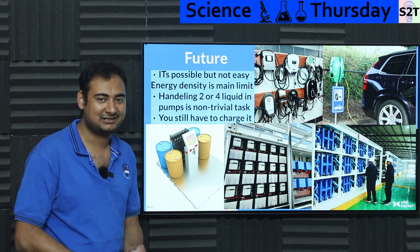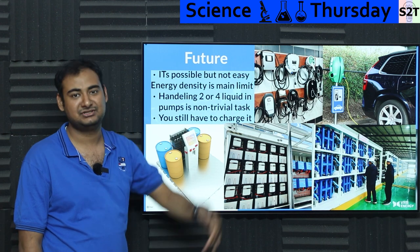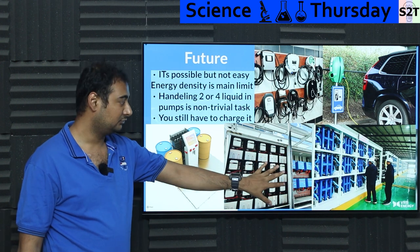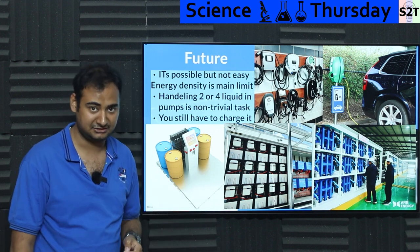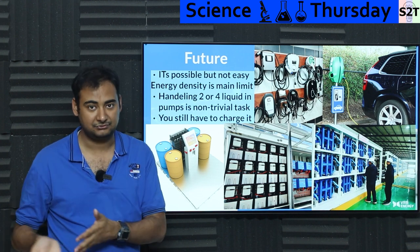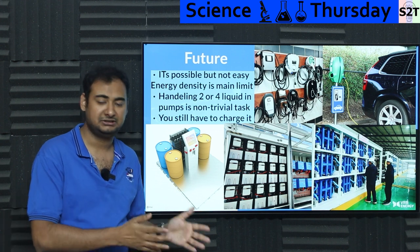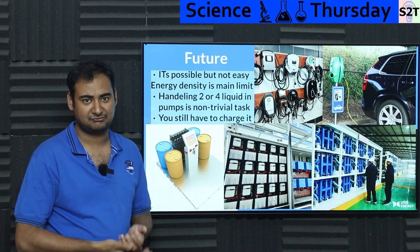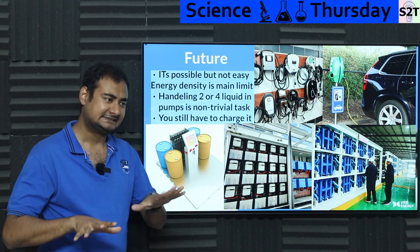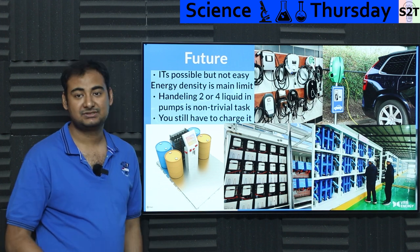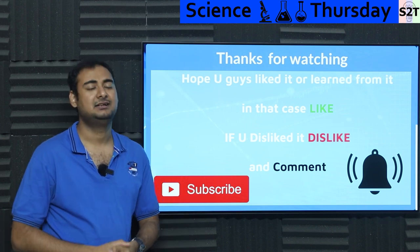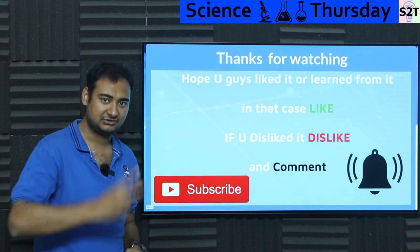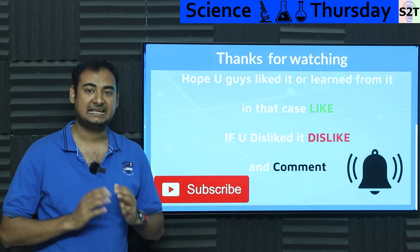Fluid batteries are here and they're awesome for grid-scale and industrial-scale energy storage. In the future they could be great for household storage — something the size of a refrigerator that works for years with periodic motor and membrane maintenance. But for cars, I'm a bit shaky on it. So that was my presentation on nano flow cell batteries — hopefully you liked it and learned from it. Please like, share, comment, subscribe and press the bell icon. Thanks for watching.